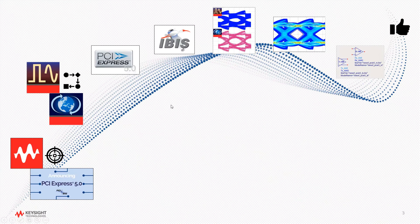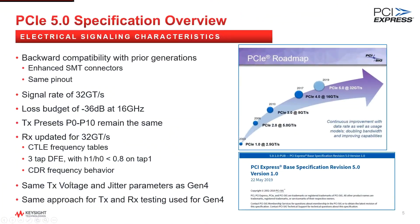Let's look at the overview of the electrical specifications. Here's a summary of the electrical signaling characteristics. This latest specification update supports a signaling rate of 32 gigatransfers. A similar connector pinout as in prior generations, but instead of through-hole mount, now a surface mount option is needed. The informative loss budget spec is minus 36 dB at 16 GHz. Same transmitter presets, P0 through P10.